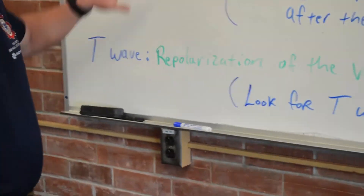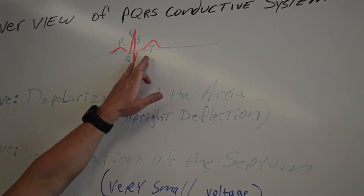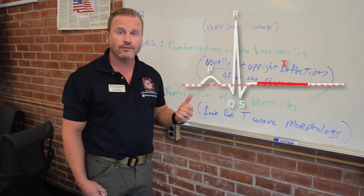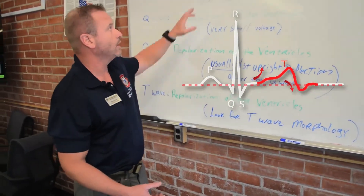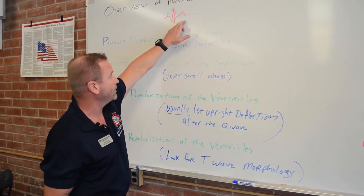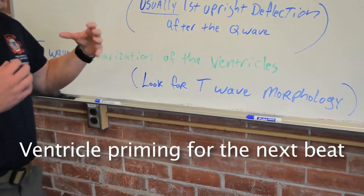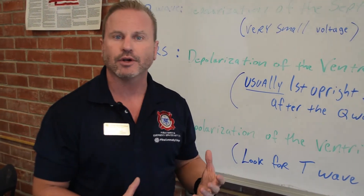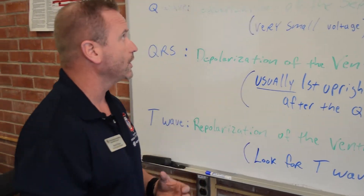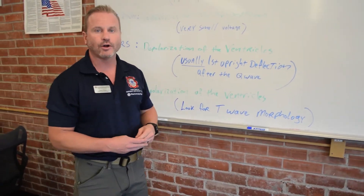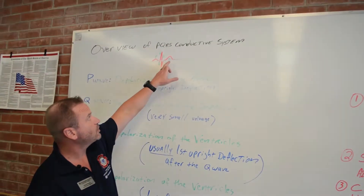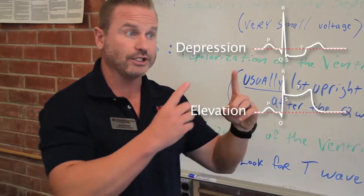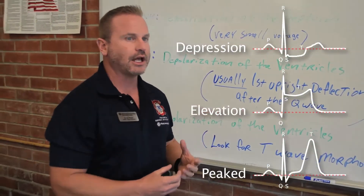The T wave is usually very discernible — it's the next upright deflection after your QRS in most cases. You can have a flat T wave, an inverted T wave, or a biphasic T wave. Some of those things could be leading to real badness. Usually you'll see repolarization of the ventricles — this is the ventricle priming for its next beat. We look for T wave morphology in future lectures: the shape, the height, if there's depression or elevation, or if they're really tall peaked T waves — all of these things can have significant clinical factor.